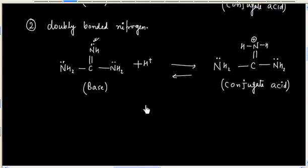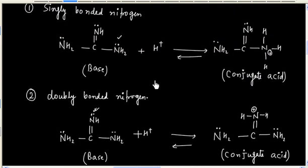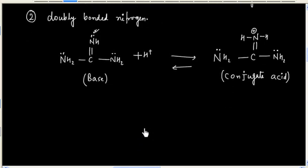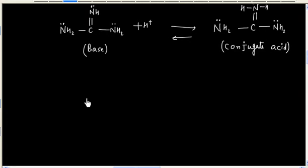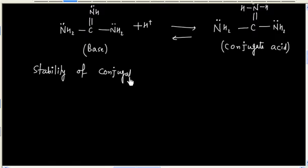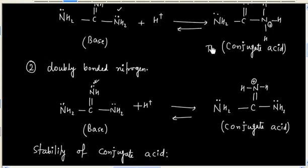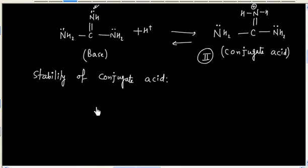These reactions are acid-base reactions and will be in equilibrium. We need to find which nitrogen gets protonated — either singly bonded or doubly bonded. To determine this, we look at the stability of the corresponding conjugate acid. Let us call the first conjugate acid 1 and the second conjugate acid 2. Conjugate acid 2 is very stable.